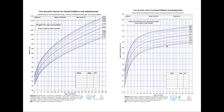Hello everyone. Today I'm going to explain growth charts — it's super simple and easy. I'm going to show you different types and give you some examples. The first thing you check on a growth chart is the nationality or region. As you can see here, this chart is for Saudi children and adolescents.